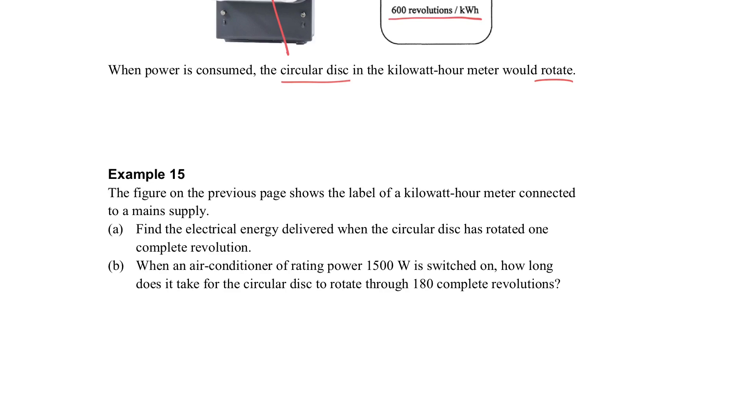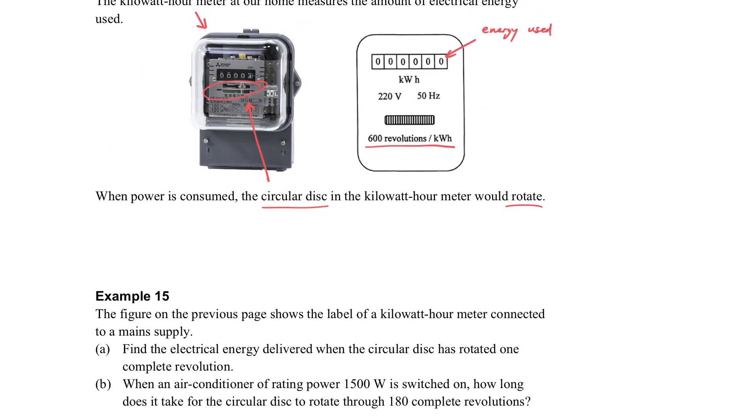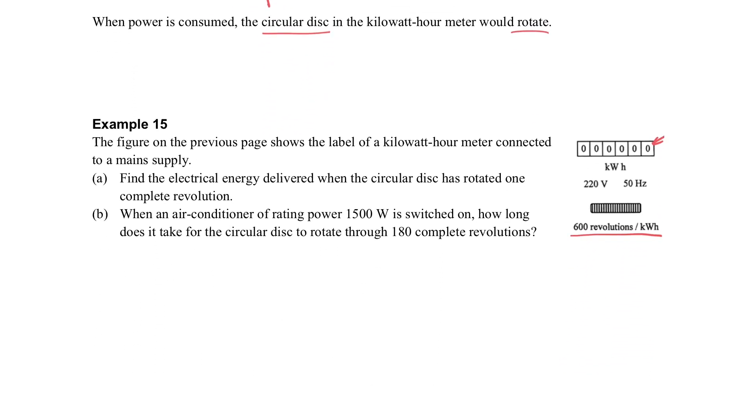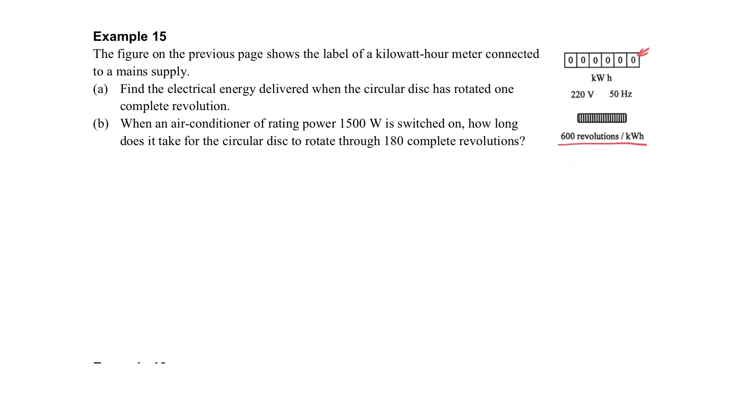Now let's take an example so we can be more clear about how it really works and the meaning of the 600 revolutions per kilowatt-hour.